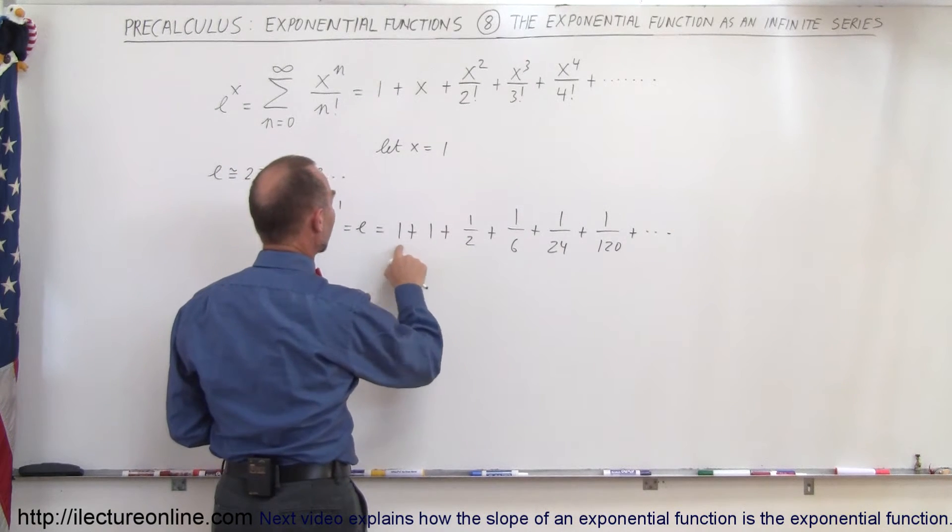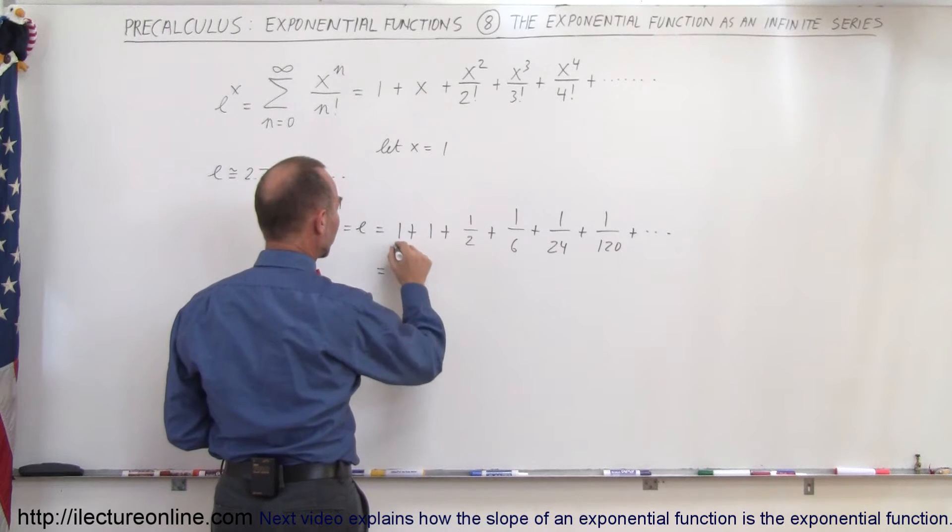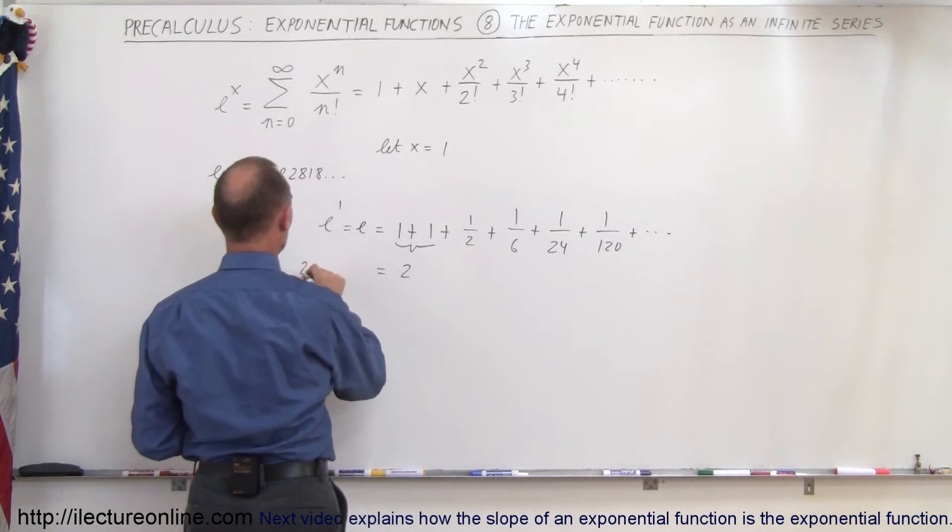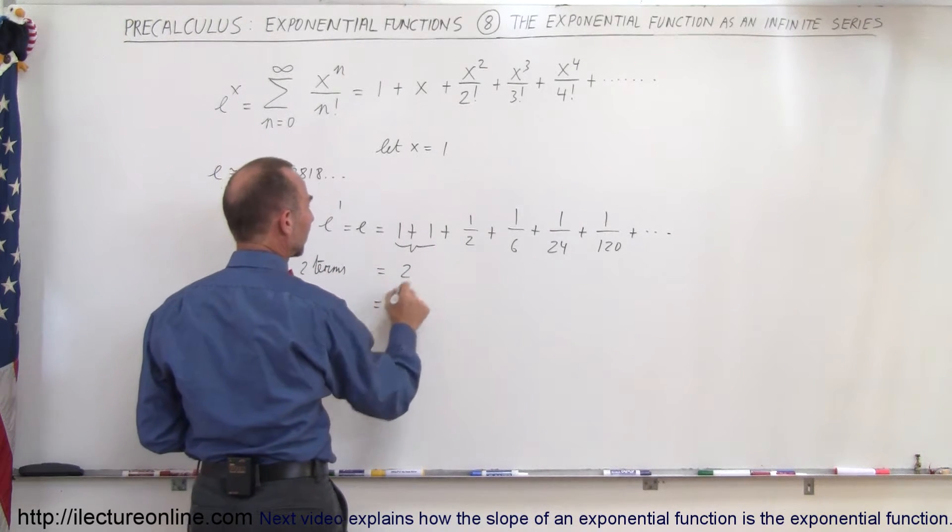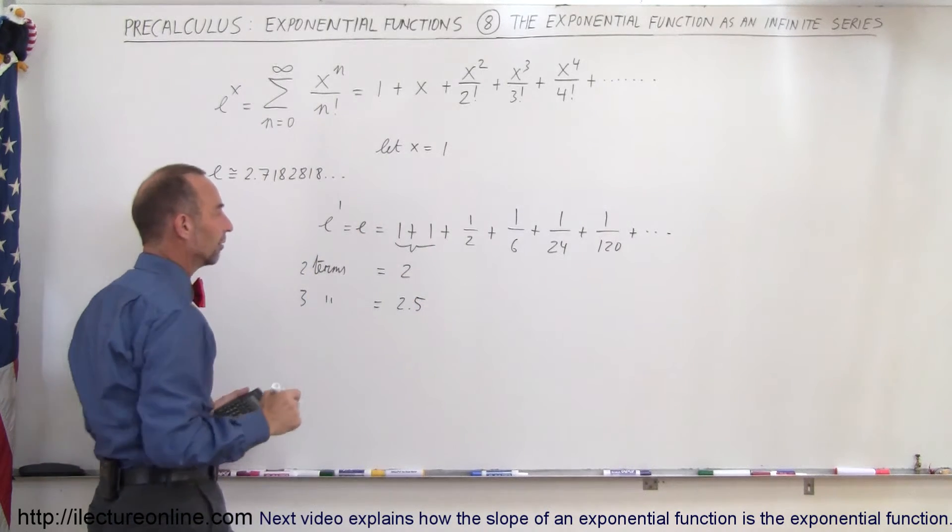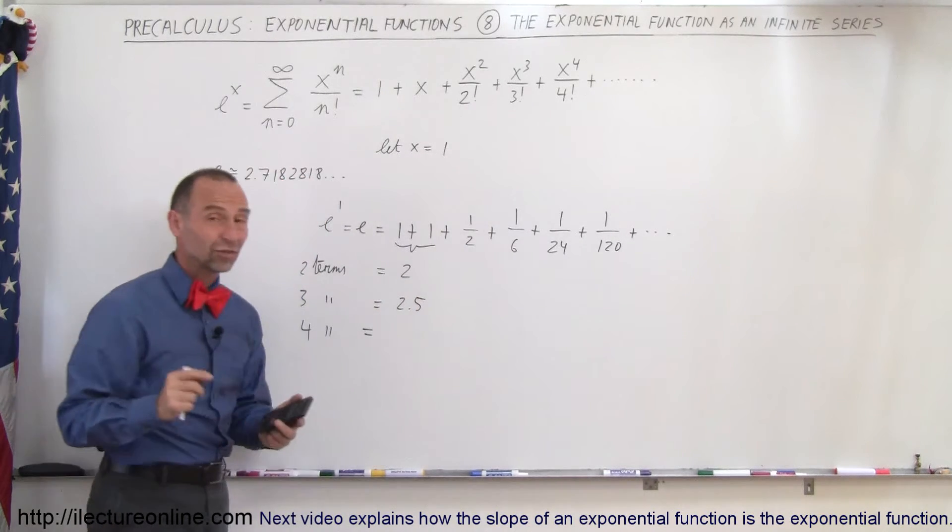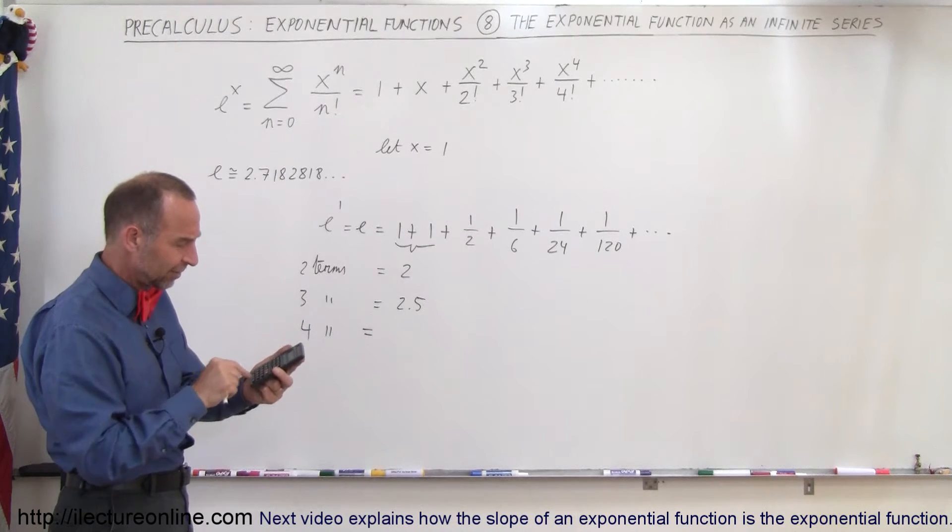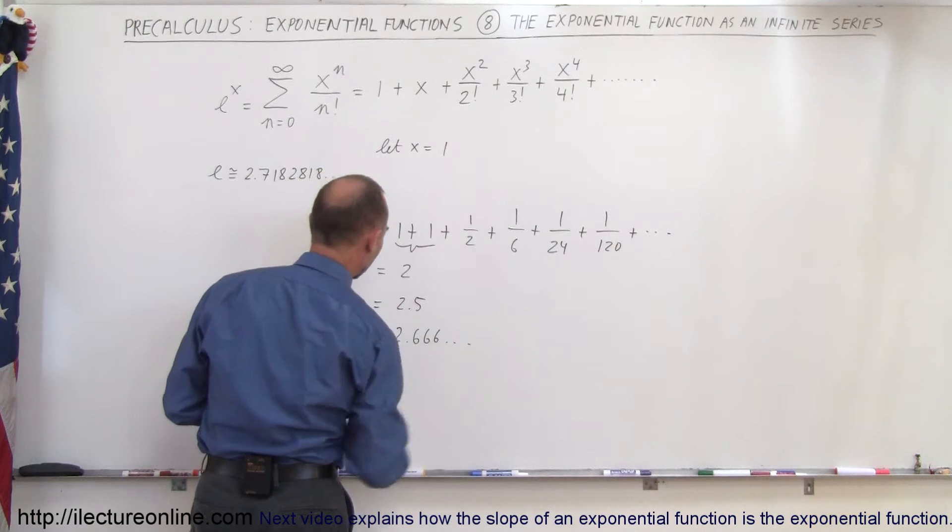After we have 1 plus 1, that would be 2. When we take the first two terms, we get the value equal to 2. For three terms, we get the value of 2.5, so you can see that we're closing in on our value here. When we take four terms, we have to add 1 sixth to 2.5, so we have 2.5 plus 1 divided by 6, and we get 2.666 like that.